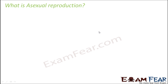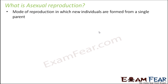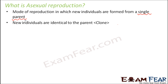Let us see what exactly is asexual reproduction. This is that mode of reproduction in which new individuals are formed from a single parent. New organisms are formed from one parent — unlike human beings, where there are always two parents, mother and father, who together produce a new baby. But in asexual reproduction, only one parent is sufficient; one organism can itself produce a new organism. The new individuals are exactly identical to the parent, and these are called clones.